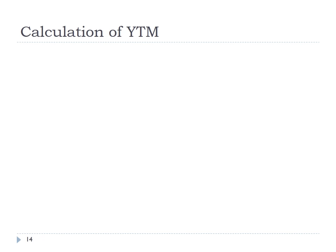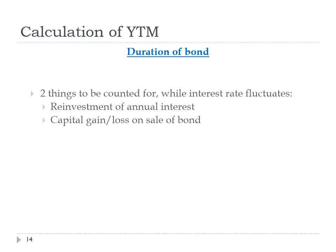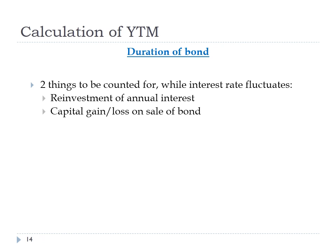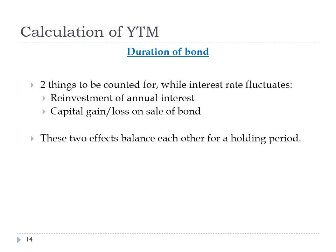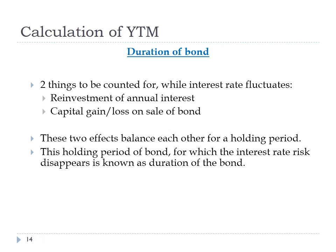Another important topic in this chapter is duration of bond. Investors investing in a bond mainly look at two things: the reinvestment of annual interest and the capital gain or loss on sale of the bond at the end of the holding period. When interest rates rise, there is a gain in reinvestment and a loss on liquidation, and the converse is true when interest rates fall. For any bond, these two effects exactly balance each other for a specific holding period, at which there is low interest rate risk. This holding period is known as the duration of bond.